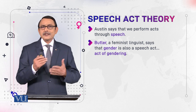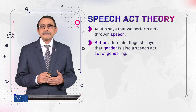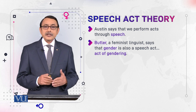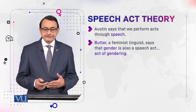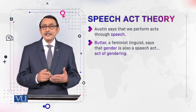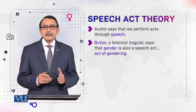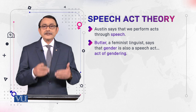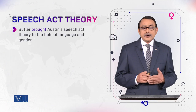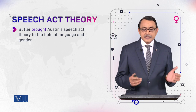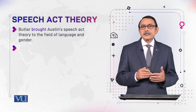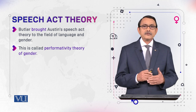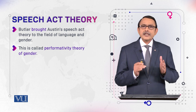She says — how does she relate this theory to this field? She says that like other speech acts, gender is also a speech act. This is interesting. So gender is an act and it is performed through speech. That is why we call it gendering, as we call other speech acts like promising, inviting, agreeing. Butler brought Austin's speech act theory into this field and has called it the performativity theory of gender. The name is changed, but the basic stance and assumption is the same.